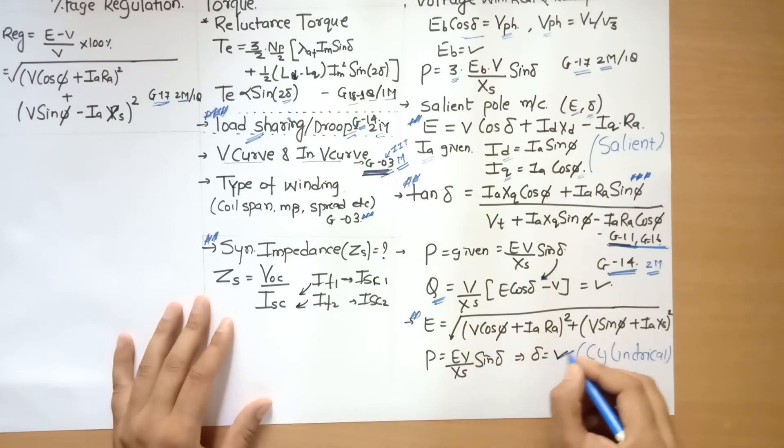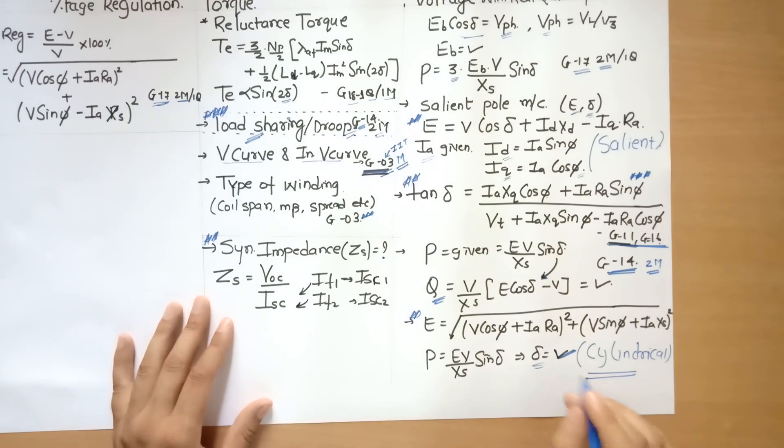So P was given. E you can find out from here. Xs is given, so based on that you can find out delta. This is the overall analysis of the paper since 2003.